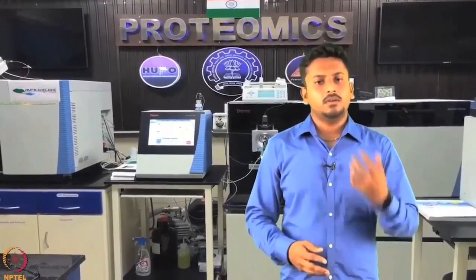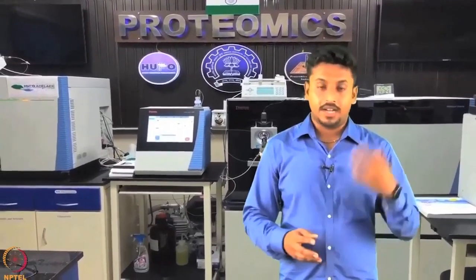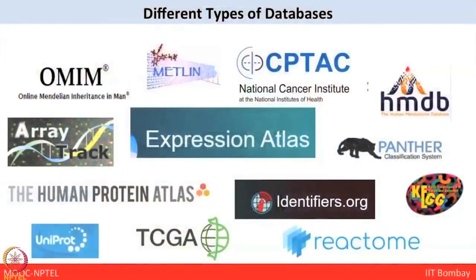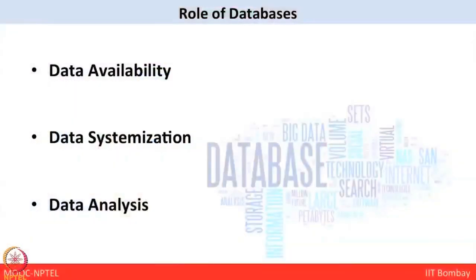Now let us talk about different databases that are available. A database is a collection of data — any data — that can be proteomics data, genomics data, metabolomics data, and there are also databases available in astronomy, ecology, and cosmic sciences. The main roles of databases are: availability of biological data, systemization of the data, and analysis of computed biological data.